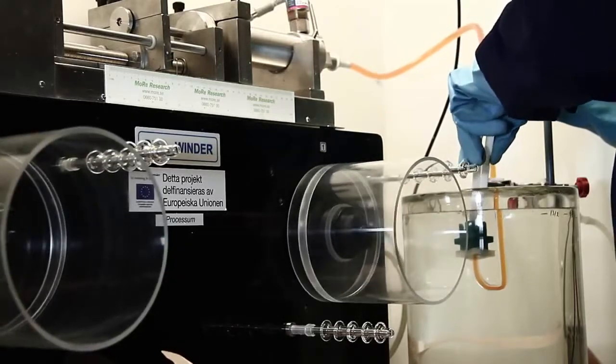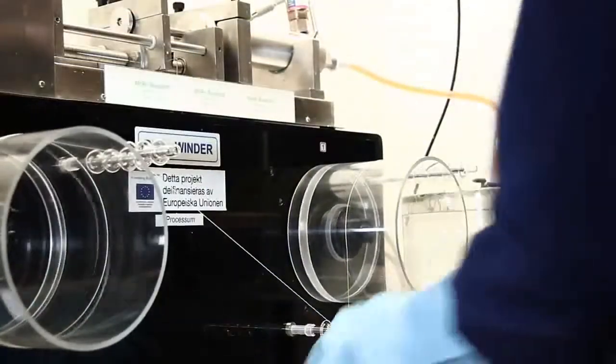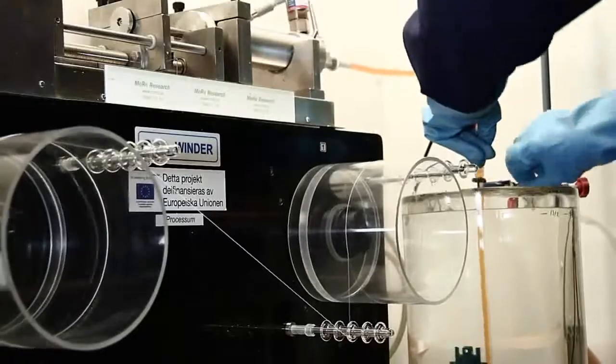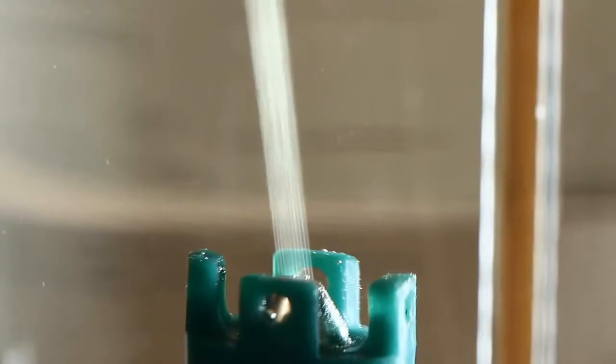The viscous dope is pressed through a spinneret containing small holes and out into the spin bath. When the viscose comes in contact with the spin bath, the cellulose is regenerated and a viscose filament is formed out of each hole in the spinneret.